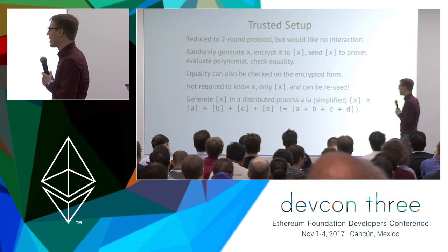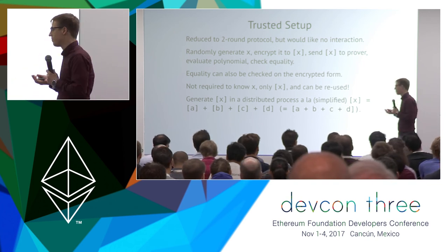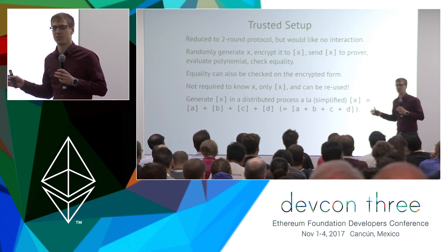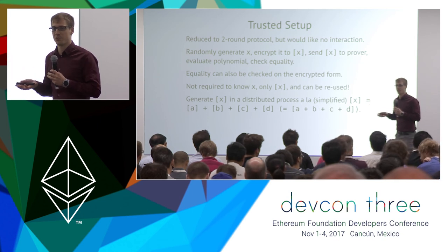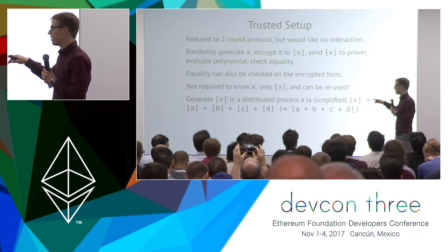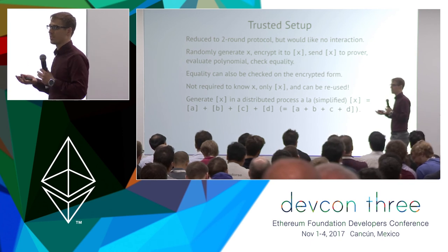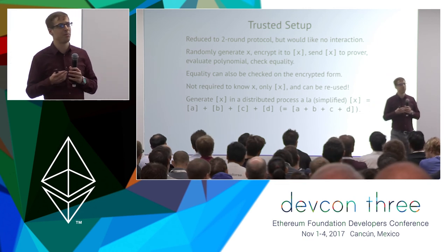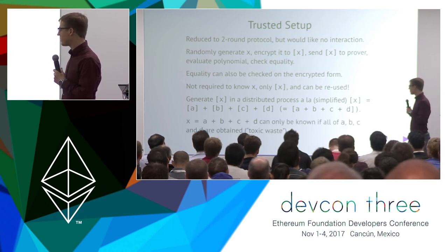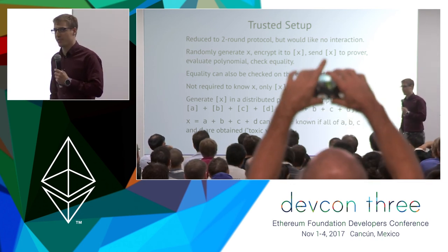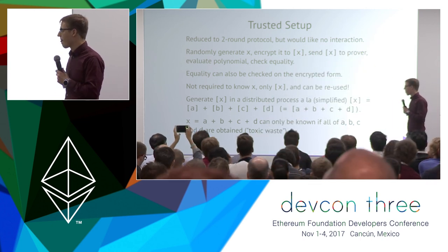Why distributed? We want to share responsibility among multiple participants. If anyone publishes the decrypted version of X, fake proofs can be created. But if the encrypted version of X is a combined version of all participants' secrets, then all participants must publish their secrets for it to be broken. These secret numbers generated by participants are called 'toxic waste' because they should never be published — they should simply be destroyed.